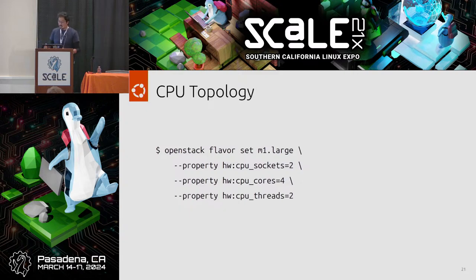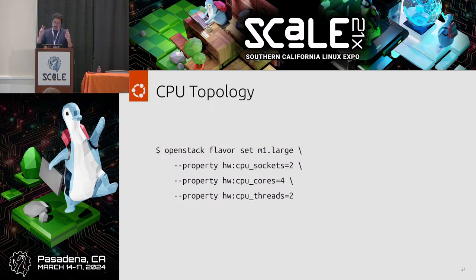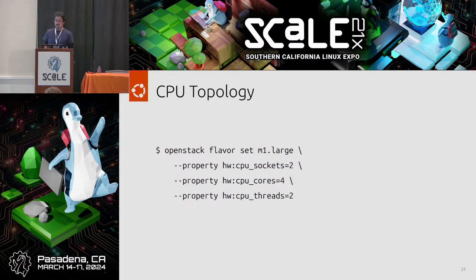For instance, here we have a flavor defining two sockets, each socket having four cores, and each core having two threads. If you launch a VM based on this flavor, when you SSH into it and run lscpu, you'll see this machine has 16 CPUs with that CPU architecture topology. But we still have the problem that there is no way to guarantee how this will map in the hypervisor — the scheduler may still move these processes around, giving you a bad performance experience.